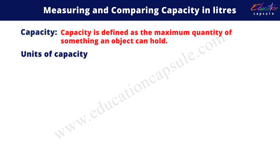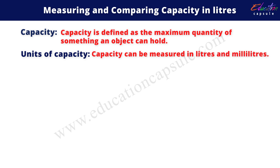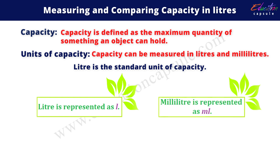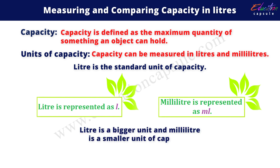Now, what are different units of capacity? Capacity can be measured in liters and milliliters. Liters is the standard unit of capacity. Liter is represented as small l, whereas milliliter is represented as small ml. Liter is a bigger unit and milliliter is a smaller unit of capacity.